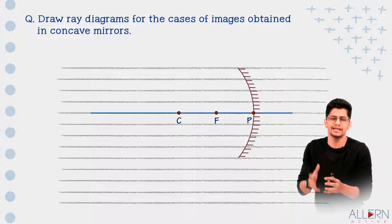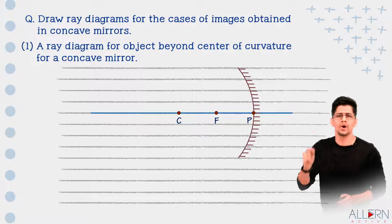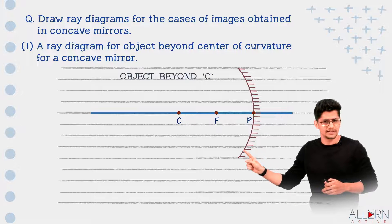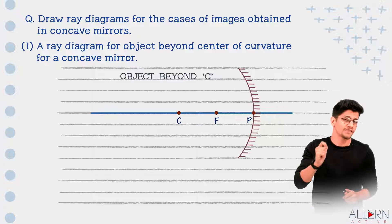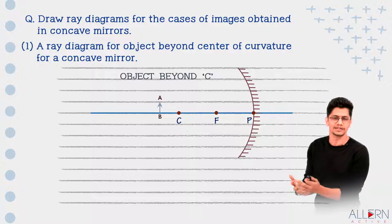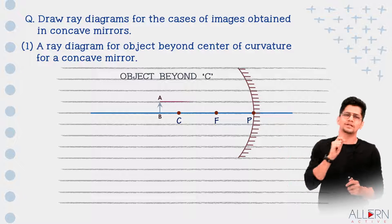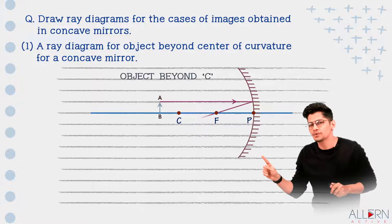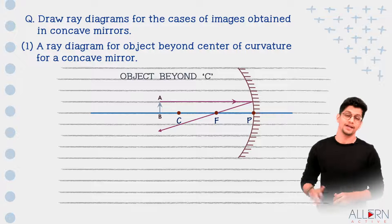We'll start the first ray diagram when the object is placed beyond center of curvature, that means beyond C. From C to the left-hand side we'll take approximately one centimeter and draw the object, which is always in the form of an arrow pointing upward, named as AB. We take the scale and draw the incident ray parallel to the principal axis, and after reflection it passes through the focus. This is the first rule applied — we need a minimum of two rules.